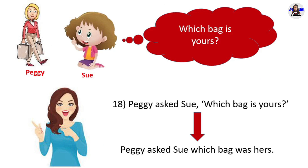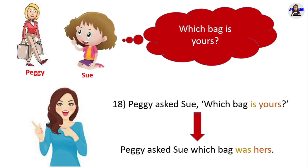Next example: 'Which bag is yours?' Peggy asked Sue 'Which bag is yours?' in direct speech. In reported speech, Peggy asked Sue which bag was hers. 'Is' in present simple changes into 'was' in past simple. The pronoun 'yours' changes into 'hers.'